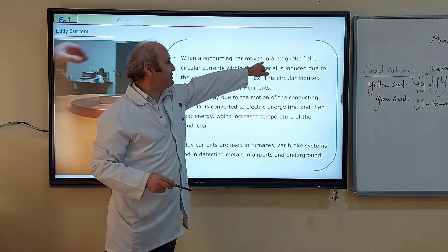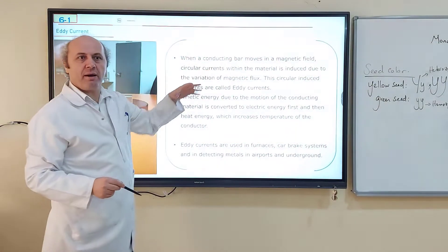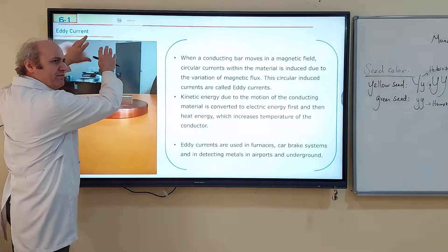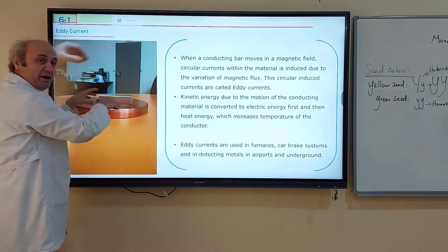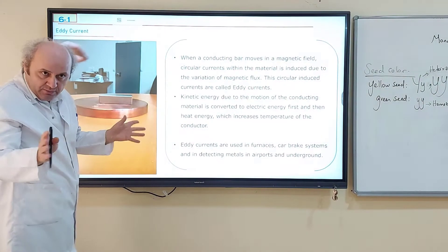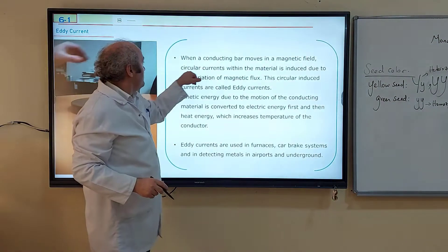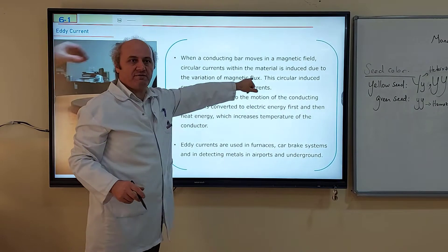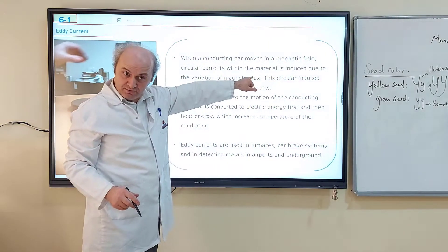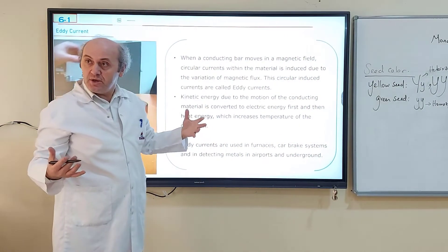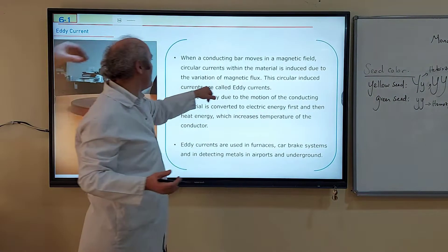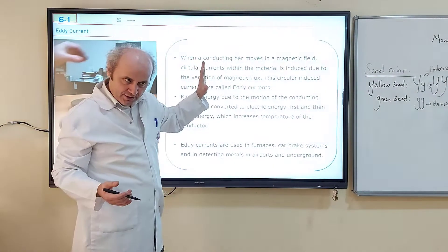When a conducting bar moves in a magnetic field, this conducting bar can be a copper block. Then you can also move the copper block towards the magnetic field, or you can release a magnetic field towards the copper block. Similar thing, in fact. Circular currents within the material is induced due to the variation of the magnetic flux. Because of the change in magnetic flux through this material, there will be an induced current. These circular induced currents are called eddy currents.